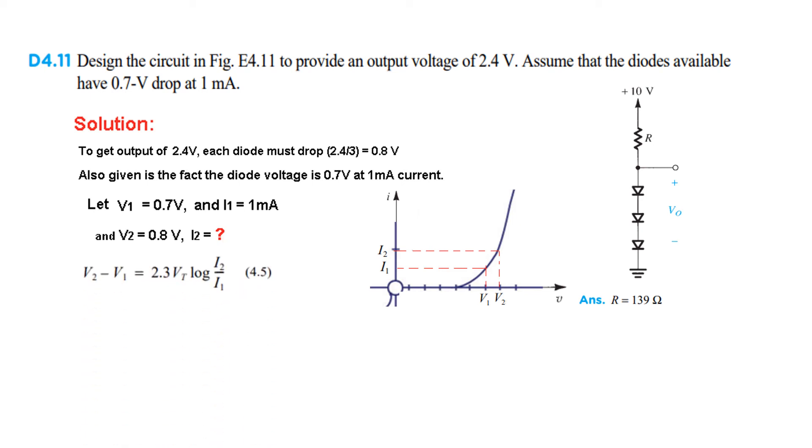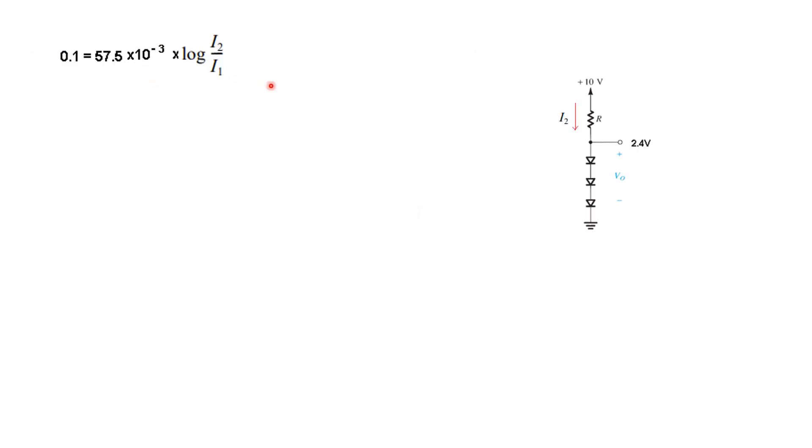The equation for current I2: putting the values 0.8, 0.7, 2.3, and Vt is 25 millivolt, which is standard practice at normal temperature. Simplifying, log(I2 over I1) equals 0.1 divided by 57.5, which equals 1.739.